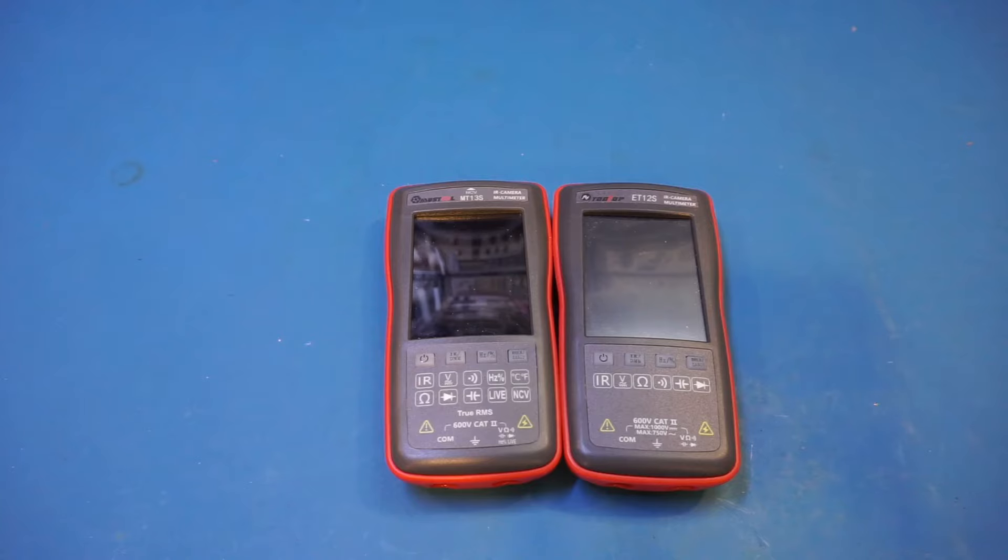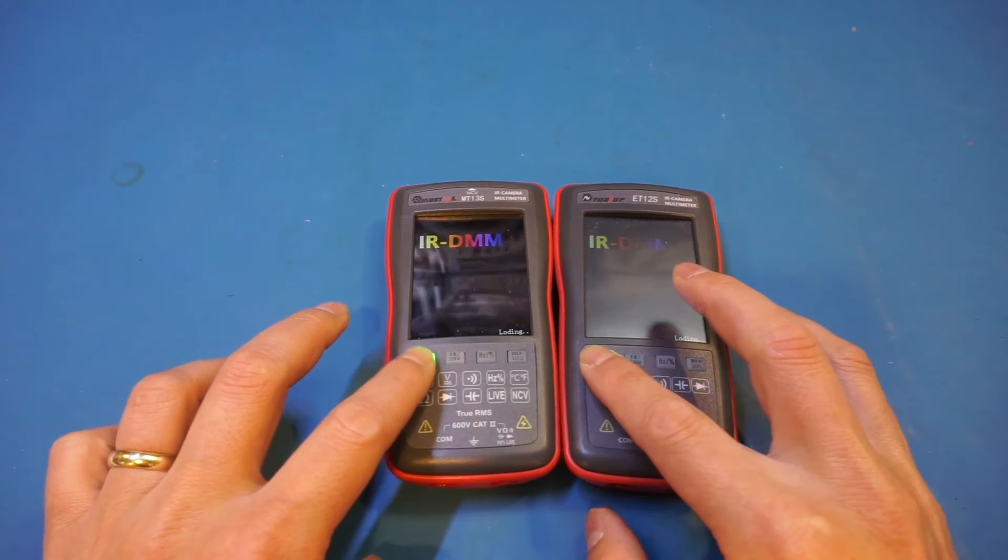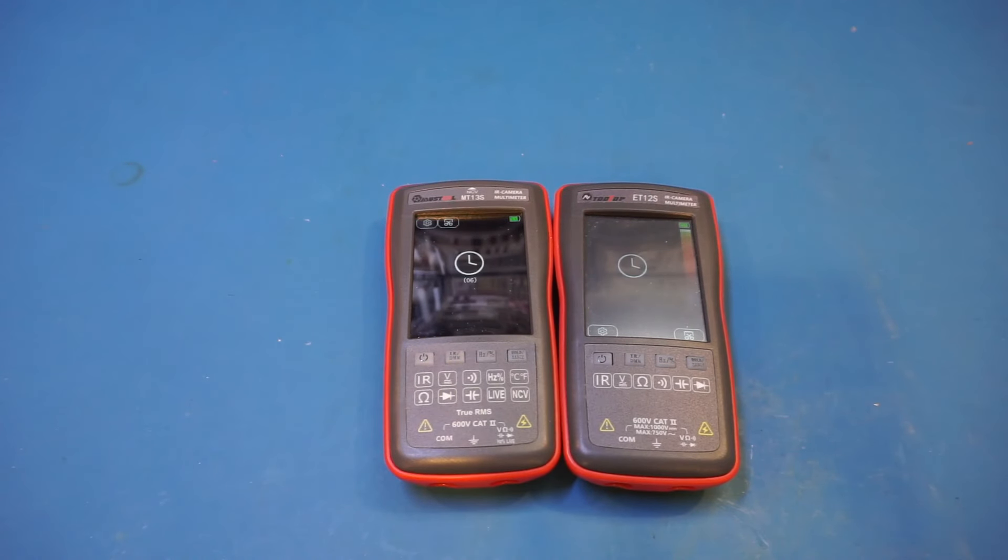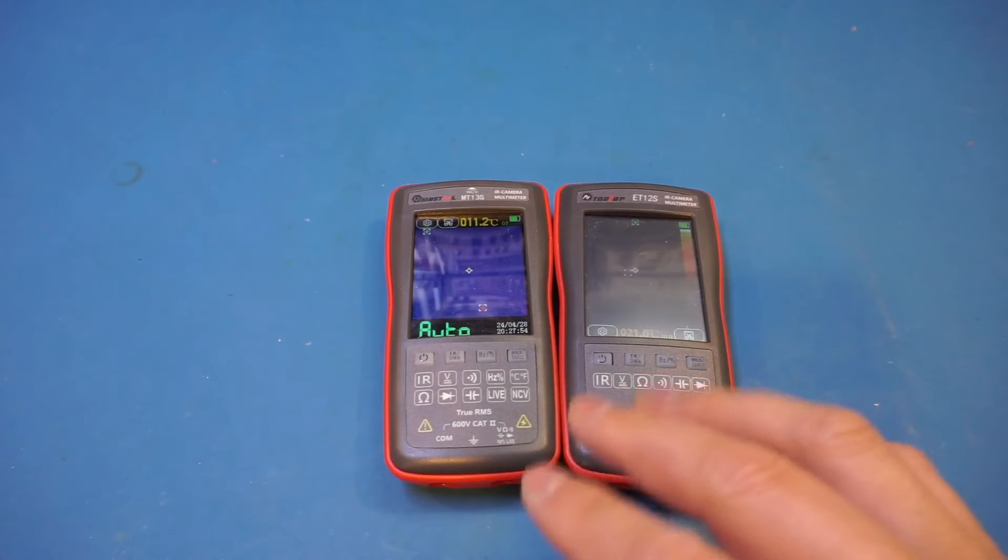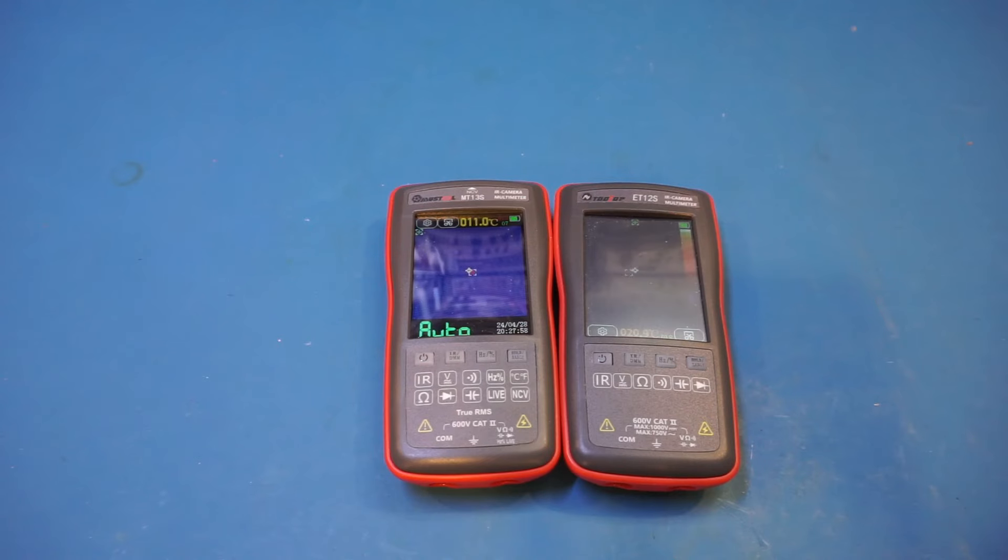All right, let me power both of these meters on, and we'll do a quick comparison. As you can see, by default, the meter boots into the infrared camera mode. And for the MT13S, it definitely took a lot longer to boot up compared to the ET12S. And that, I think, is primarily because this one has much higher specced IR sensor compared to the MUSTO.